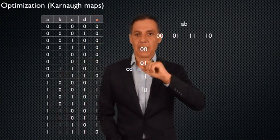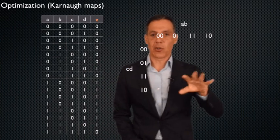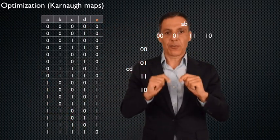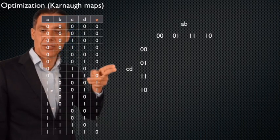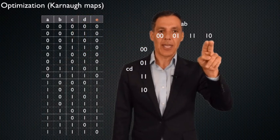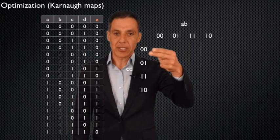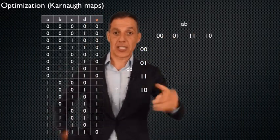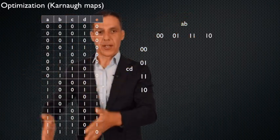So what Karnaugh maps do — spelled K-A-R-N-O-F-F — is they reimagine the truth table. Instead of having each entry for the four inputs take a single row, we have them occupy a four-by-four matrix. Up top I have the input pair AB, and on the side I have the input pair CD. This entry corresponds to when A is zero and B is zero; then A is zero and B is one; A is one and B is one; and A is one and B is zero. And this corresponds to the CD values. Notice there's no loss of information — four by four is 16, which is how many rows I have. Each cell here corresponds to a row.